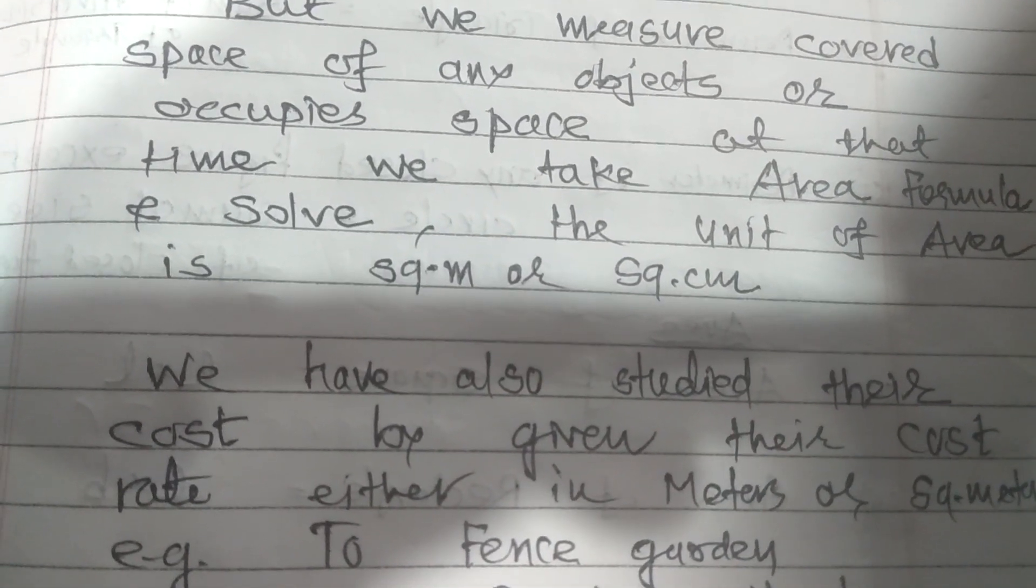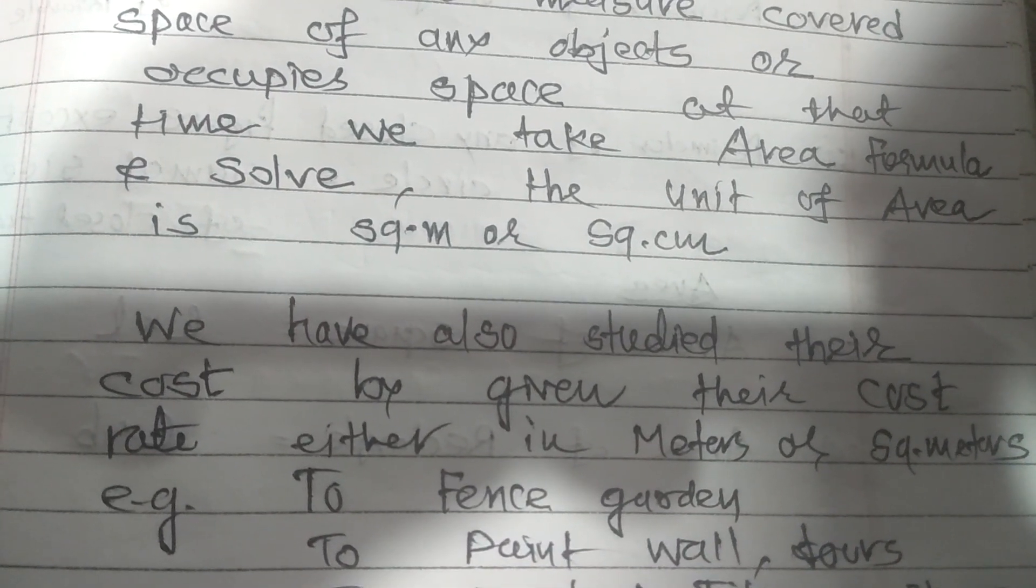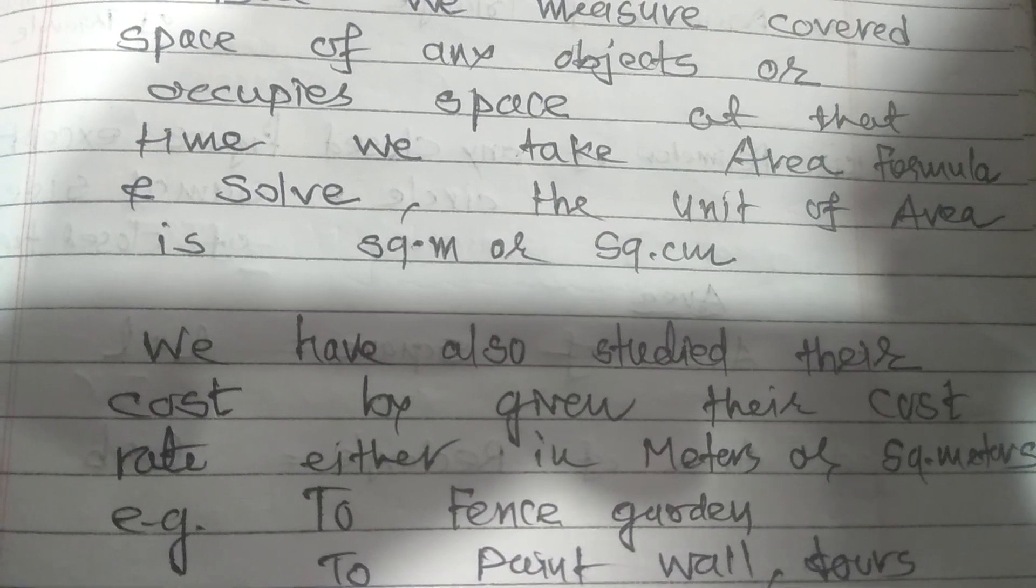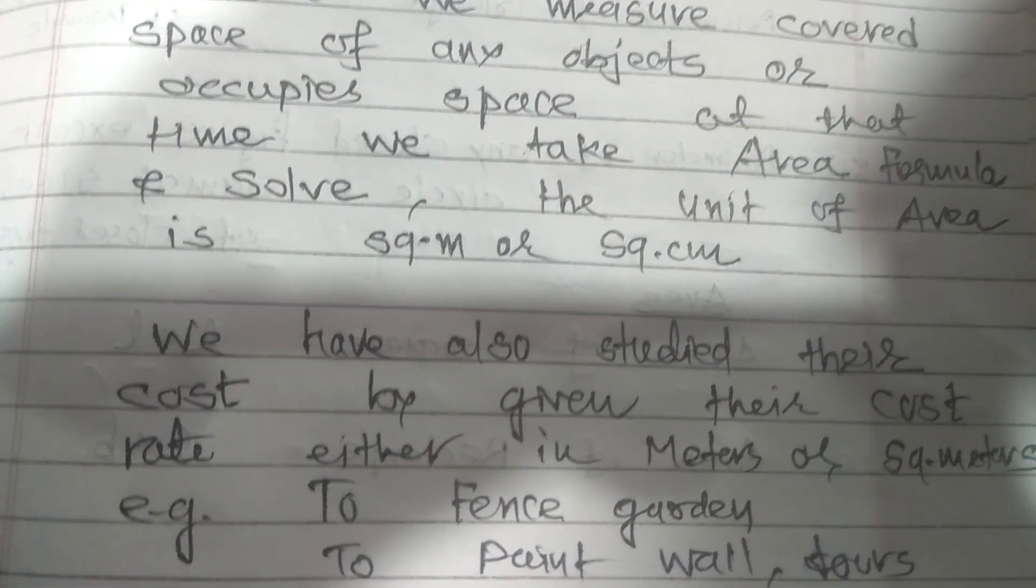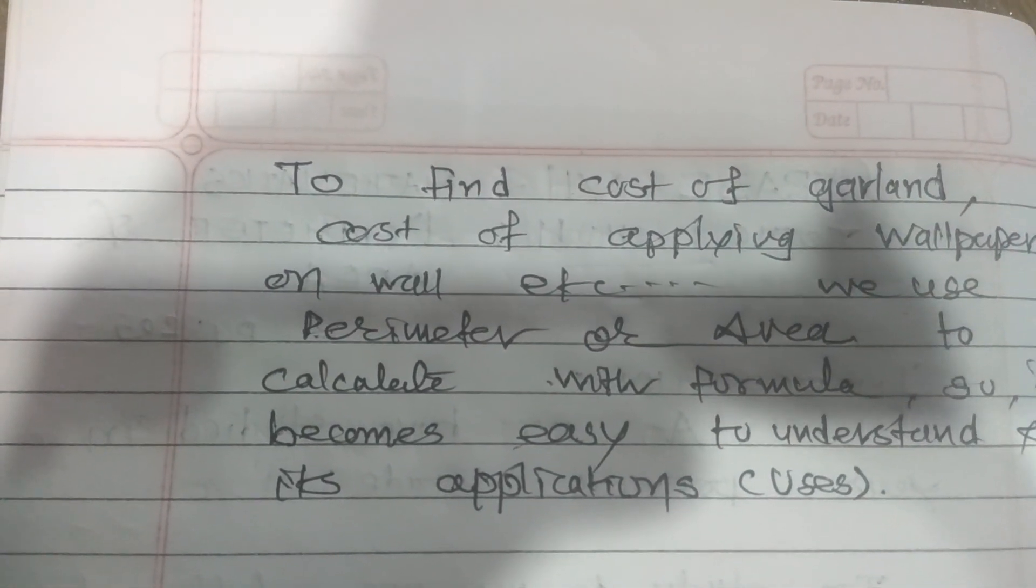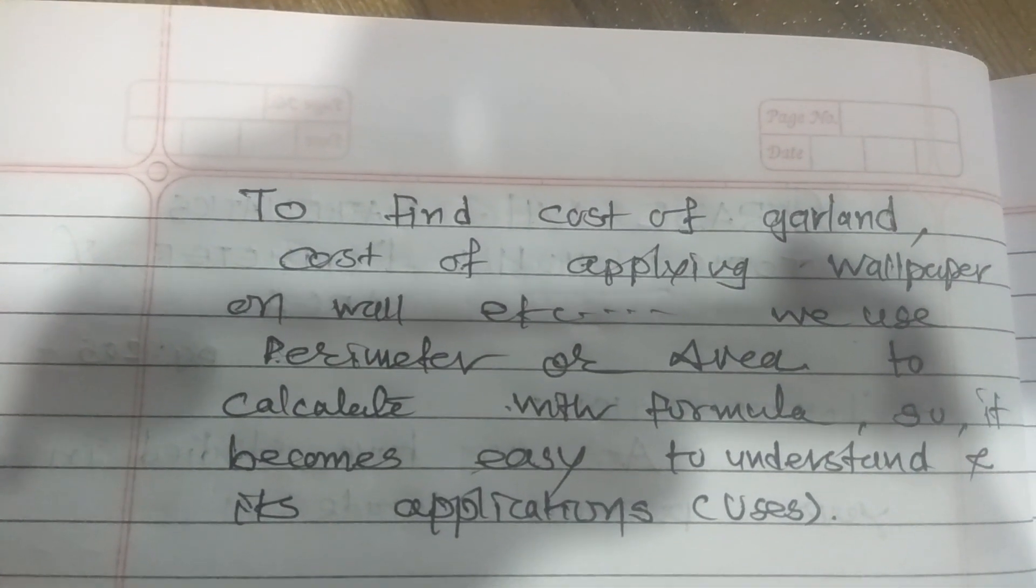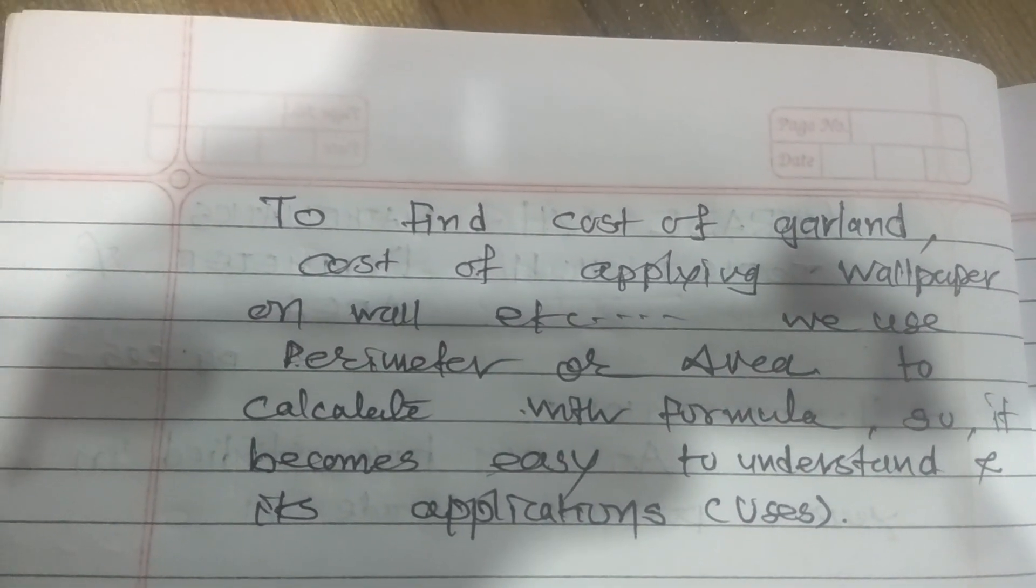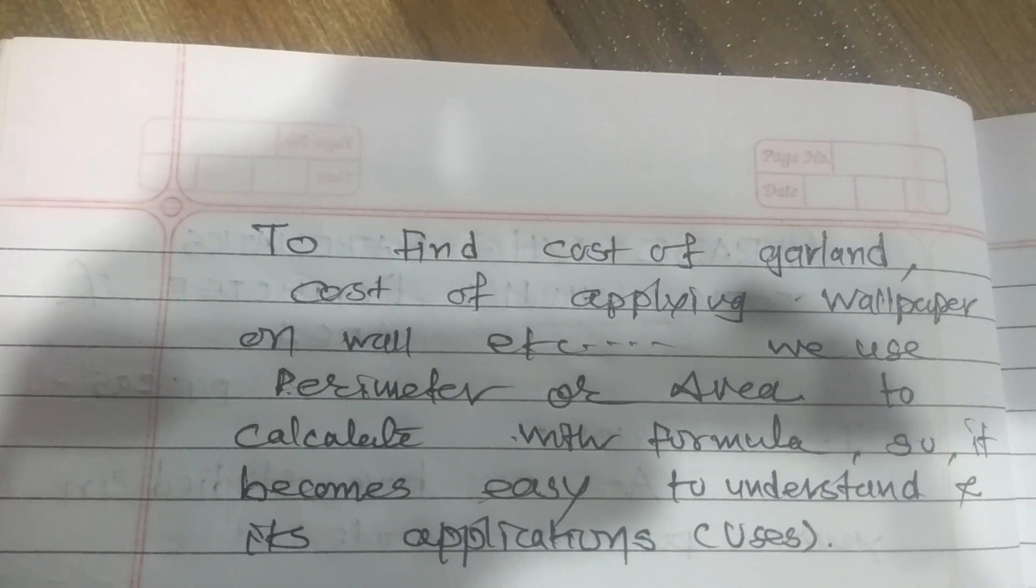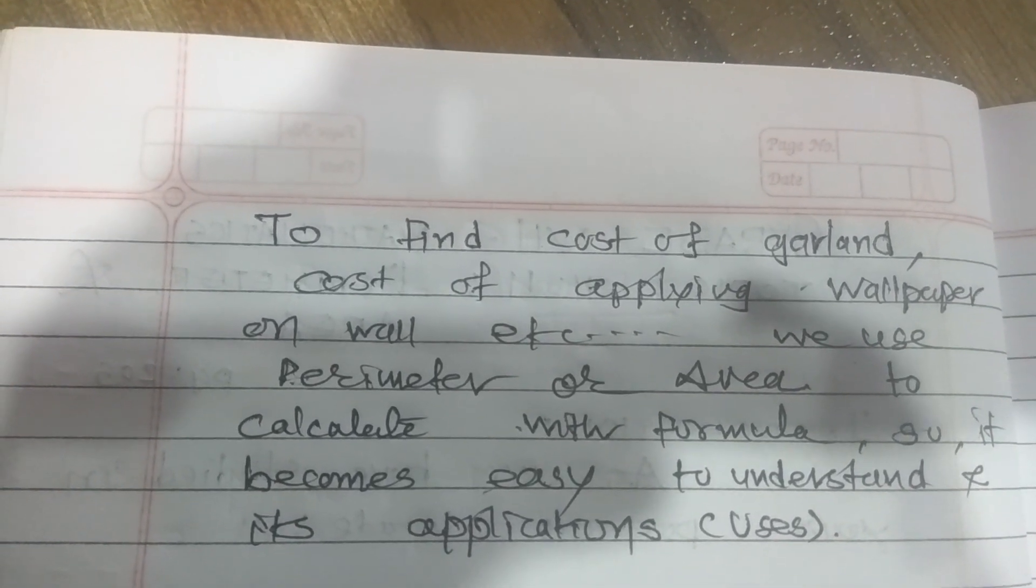We have also studied cost calculations by the given rate, either in meter or centimeter. Say for example, to fence the garden, to paint wall or door, etc., we have to find out the cost. Also we have to apply the formula for applying tiles on room, to find the cost of garland, cost of applying wallpaper on the wall, etc. In all these applications we use perimeter or area to calculate with the formula, so it becomes easy to understand its applications.